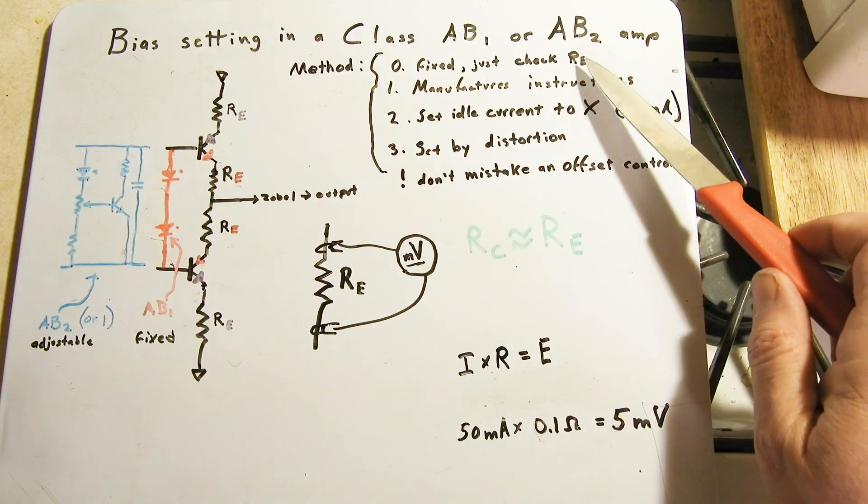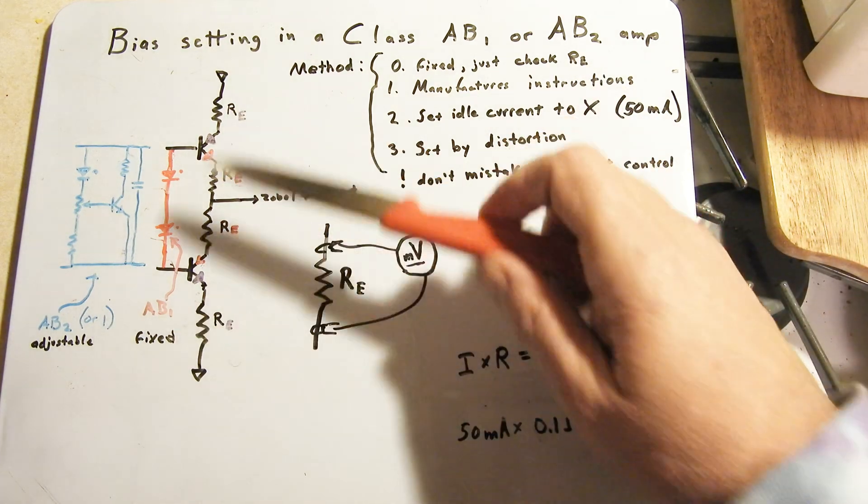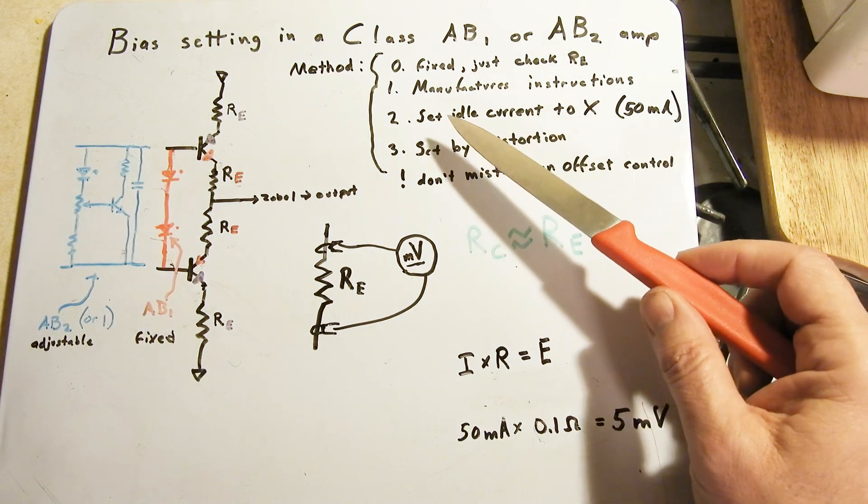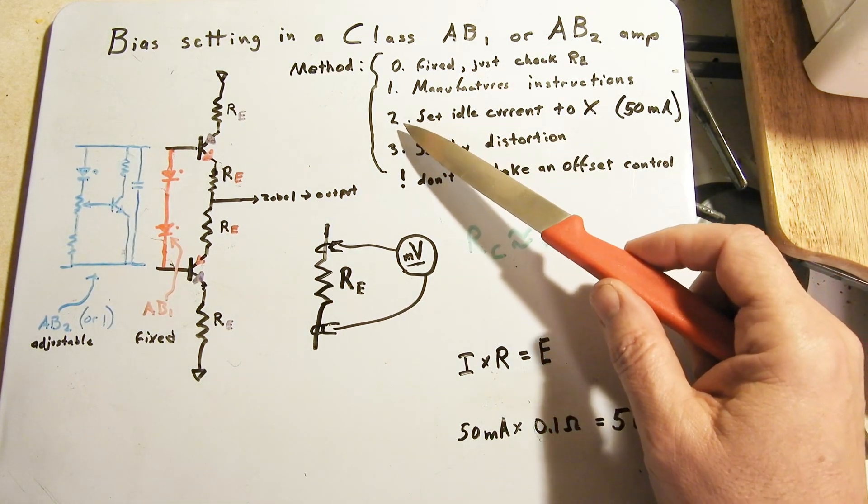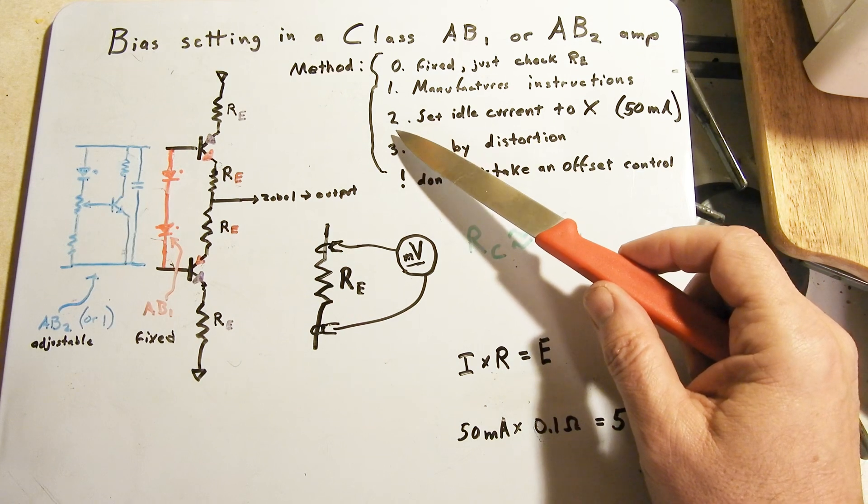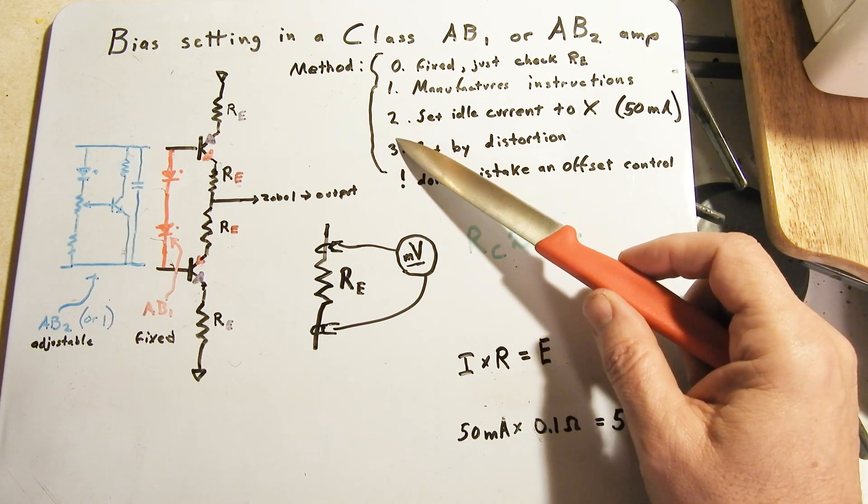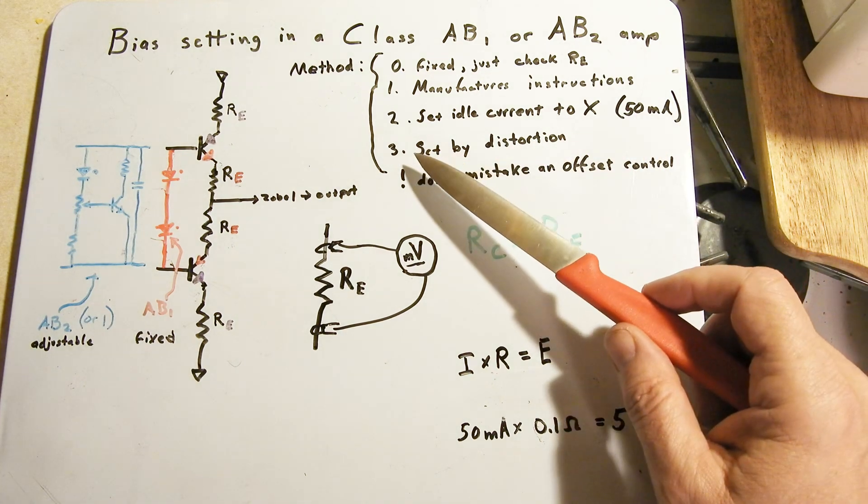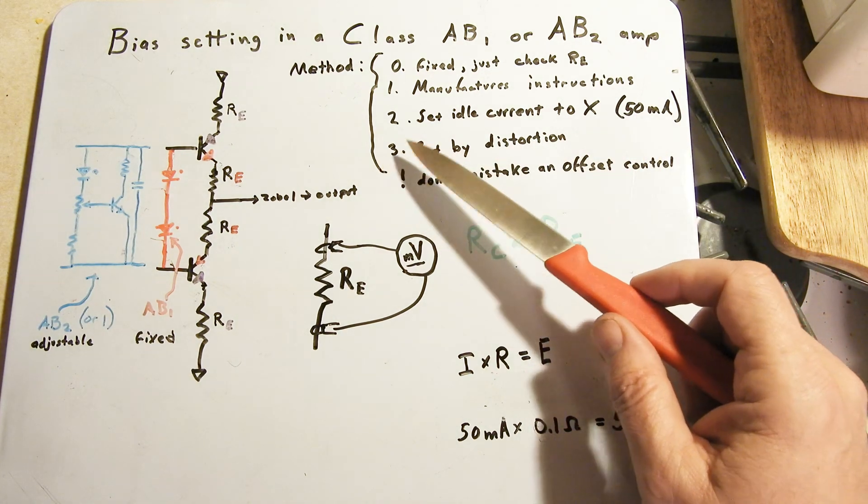If it's fixed, just check to make sure you're not unbalanced and all that. The other method that I usually most commonly use, and I'm using in all my demonstrations, is to set the idle current to x, usually 50 milliamps.